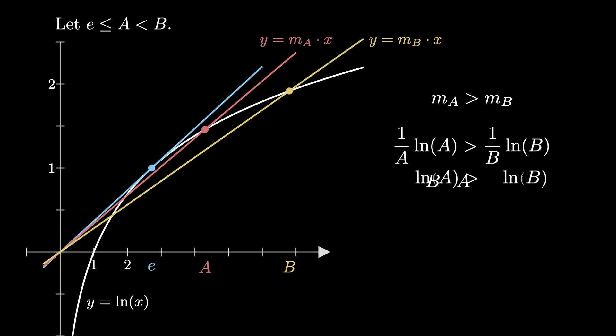Multiplying both sides by a times b shows us that b times the natural log of a is greater than a times the natural log of b. Applying logarithm rules shows us that the natural log of a to the b is greater than the natural log of b to the a. And then using the fact that the natural log is an increasing function, we deduce that a to the b is greater than b to the a.